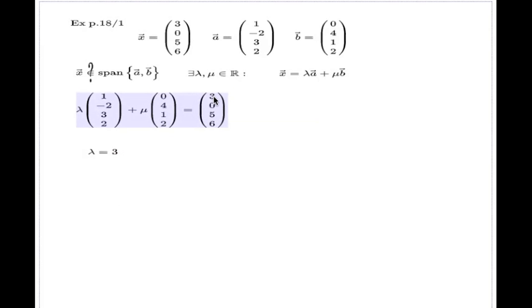The first component on the right-hand side is 3, 0 will vanish mu. Second component is negative 2 lambda plus 4 mu equals 0, that's the second component. If I equate the second component on the left-hand side, the second component on the right-hand side. Third component is 3 lambda plus single mu equals 5, and the last one is 2 lambda 2 mu equals 6.